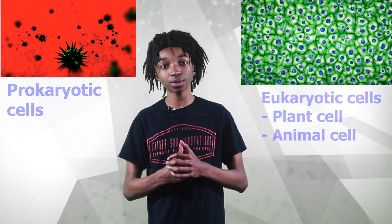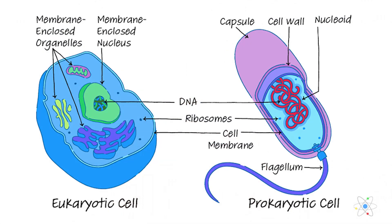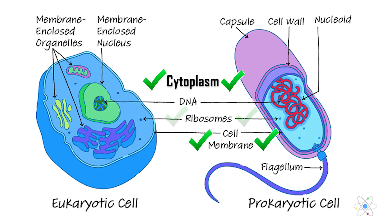Let's start off with their similarities first. Both prokaryotic and eukaryotic cells have the following organelles in common: cell membrane, cytoplasm, ribosomes, and DNA.